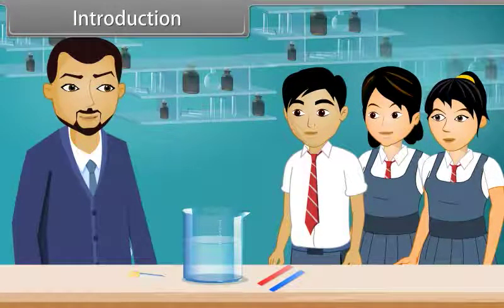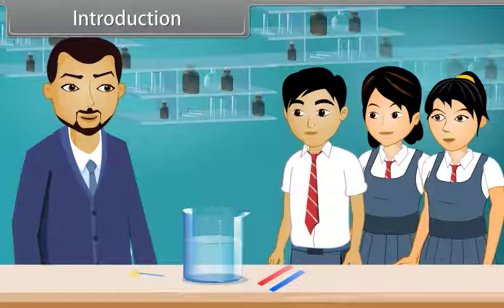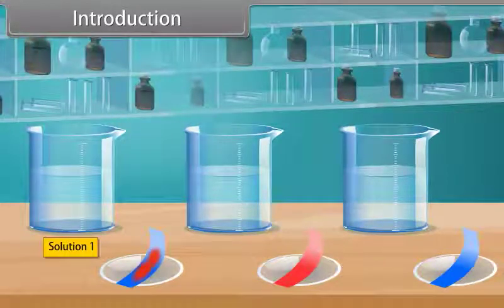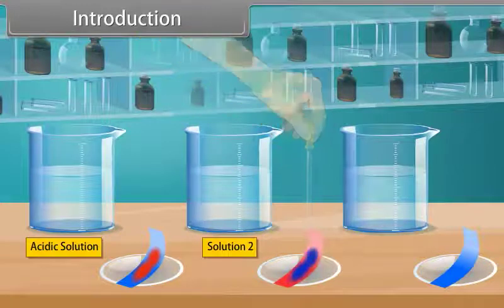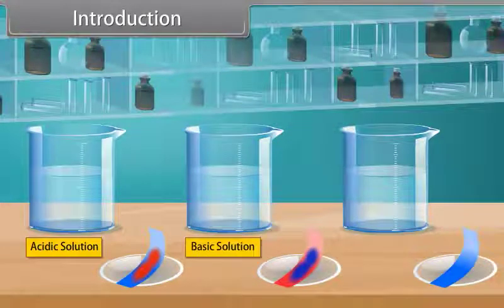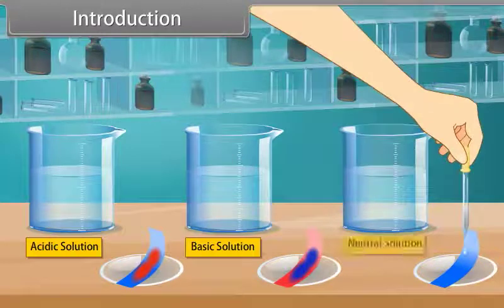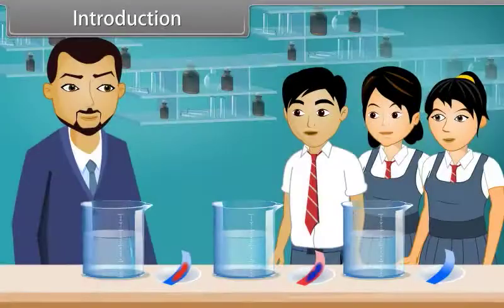Hello students, good morning. Today we will perform an experiment to identify the acidic, basic, or neutral solution. First, put a drop of solution 1 on the blue litmus paper — it turns into red, showing acidic behavior. Next, put a drop of solution 2 on the red litmus paper — it turns into blue, showing basic behavior. Finally, we test solution 3; the color is not changing, showing that this solution is neutral, and we can say that the solution is at equilibrium.